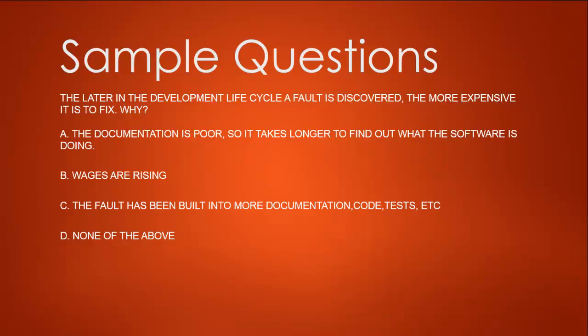Let's eliminate the options. Option A — documentation is poor — should not be the reason for fixing a fault. Documentation can be poor but software can be perfect. However, if documentation contains mistakes then software will have them in earlier and subsequent phases. Option C says the fault has been built into more documentation, code, and tests, which looks closer to our answer. Option B about wages rising is not true at all. A and B are not true, D is wrong, so our answer is C.